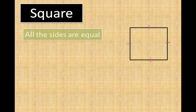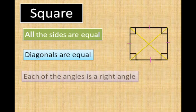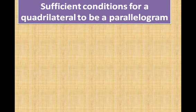Now we see the properties of a square. It is a quadrilateral in which all four sides are equal. The diagonals of a square are equal, and each corner angle is a right angle. The diagonals bisect each other at right angles.